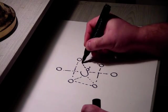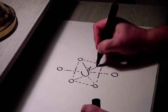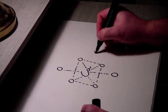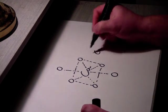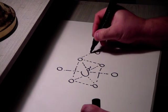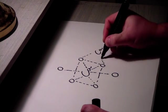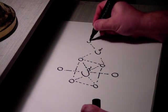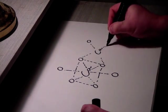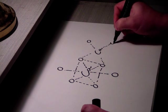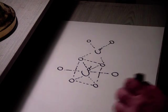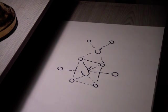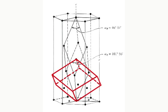Correspondingly, each oxygen is coordinated to two calcium ions as well as to the carbon ion at the centre of the carbonate group, so that overall neutrality of the structure is preserved.